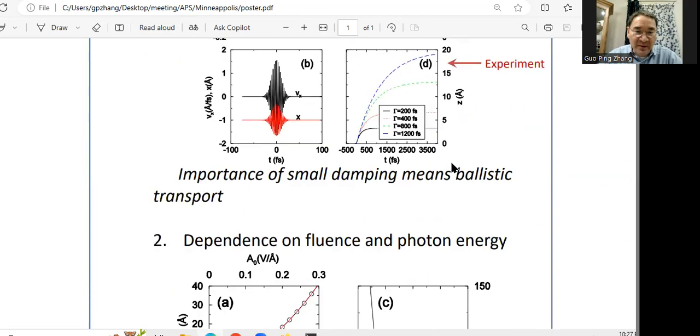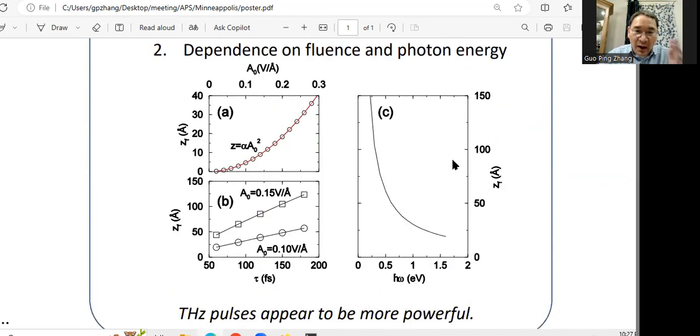We agree with experimental data very well. We also investigate the dependence on the laser fluorescence. And you can see the quadratic dependence also depends on the laser photon energy. If we have smaller photon energy, we found that actually the displacement will be larger.